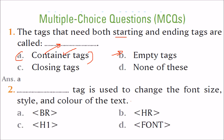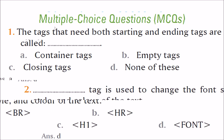Which tag is used to change the font size, style, and color of the text? BR is for line break, this is for heading, this is for horizontal rule, and this is the font tag. The answer is D — the font tag is used to change the font size, style, and color of the text.